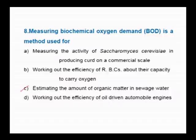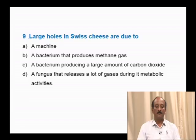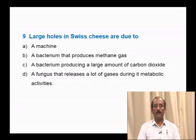Question number 9: Large holes in Swiss cheese are due to emission of — a bacterium that produces methane gas; a bacterium producing a large amount of carbon dioxide; a fungus that releases gases during metabolic activities. The large holes in Swiss cheese are mainly because of the bacterium Propionibacterium, which produces a large amount of carbon dioxide by fermentation. When carbon dioxide evaporates from the cheese, large holes are formed. The correct answer is option C.